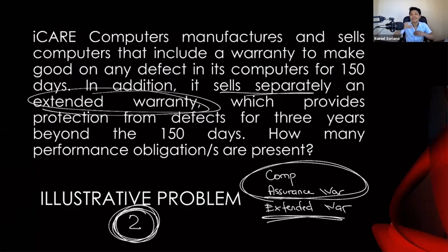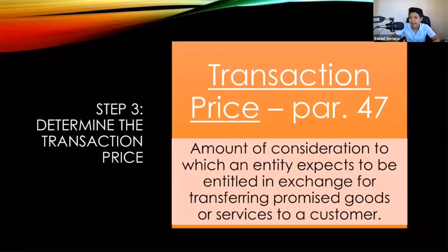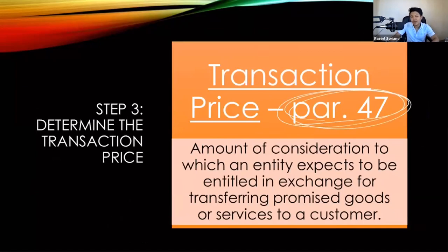That is the end of Step 2 — you just have to identify the separate performance obligations. Now let's move on to Step 3: determine the transaction price. Transaction price is discussed in paragraph 47 of IFRS 15, which defines it as the amount of consideration to which an entity expects to be entitled in exchange for transferring promised goods or services to a customer.